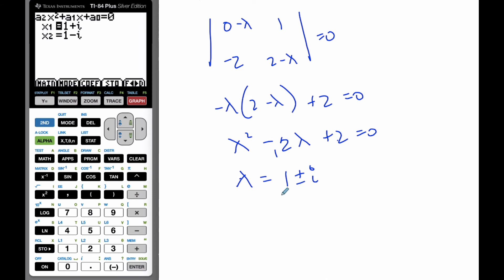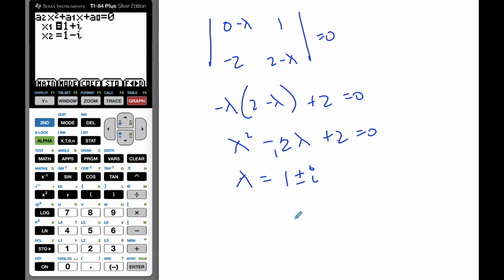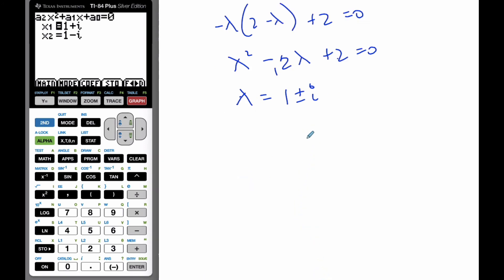And so now we know our eigenvalues are imaginary numbers, complex numbers, or to be more specific, nature of the phase portrait. Well, when I have phase portraits, I know that it's going to spiral with a complex number.